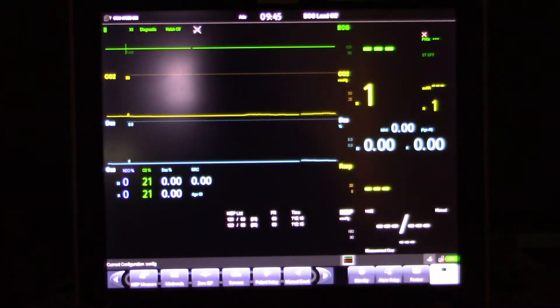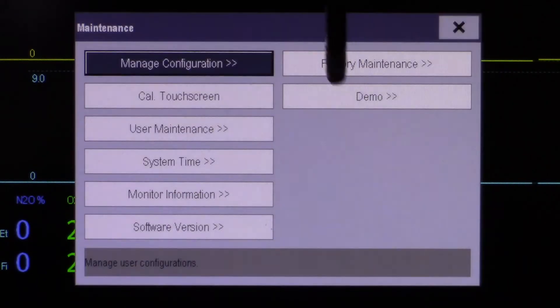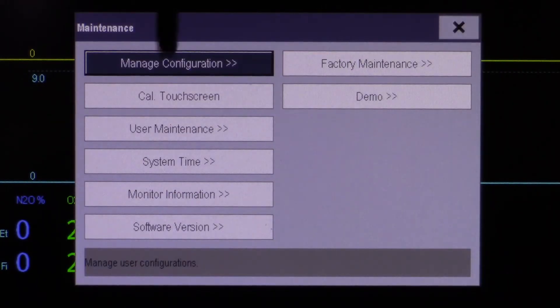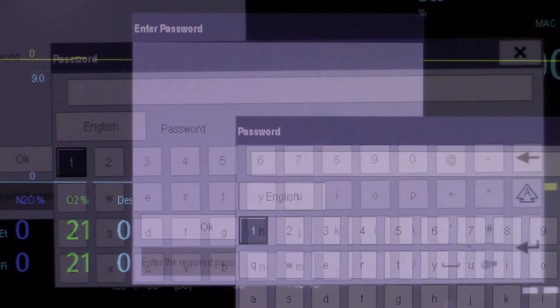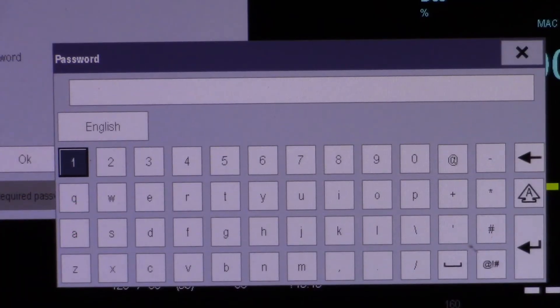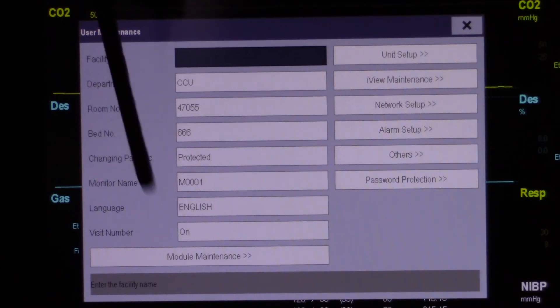Now that the AG module and the monitor have been on and running for about 20 minutes, we may now begin to attempt calibration. The first step within the user interface is to select Main Menu. Select Maintenance, User Maintenance. Touch the Password field. Enter your current password and select Accept, or contact Tech Support for further assistance. Once entered, touch Module Maintenance.